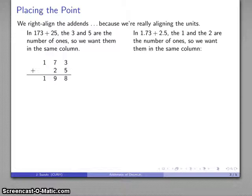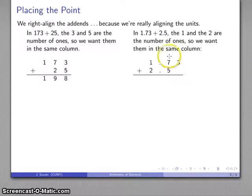If I add 1.73 and 2.5, in this case it is the 1 and the 2 that represent the number of ones, so I'm going to make sure that those two numbers end up in the same column. And now when I add, I am adding my hundreds, my tenths, and my ones, and I can perform this addition correctly and get my correct answer.